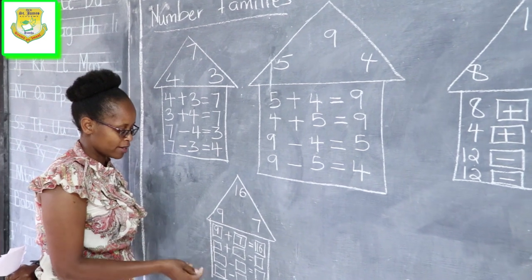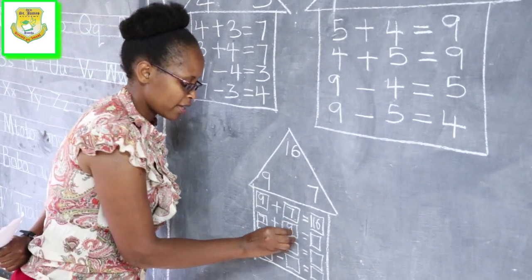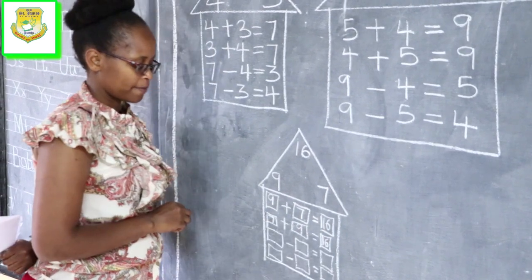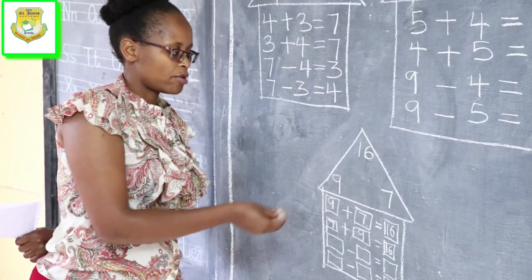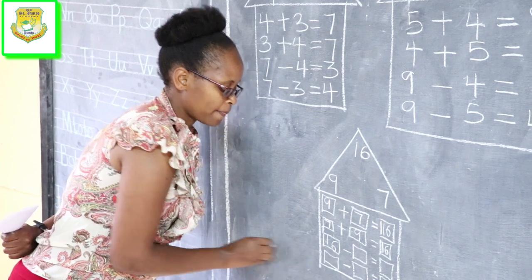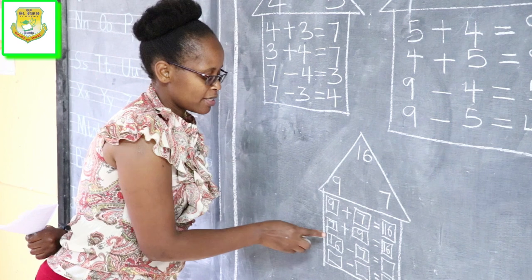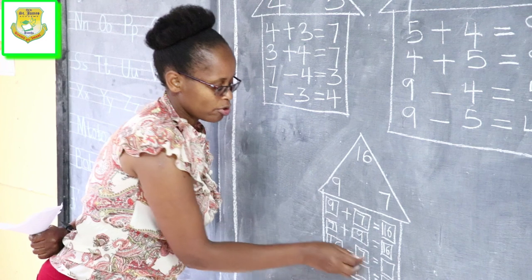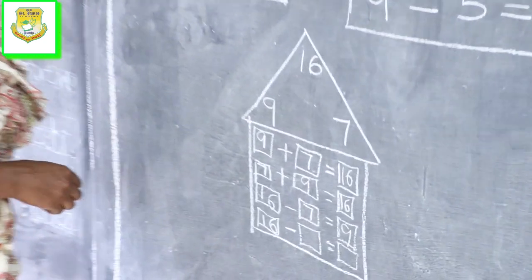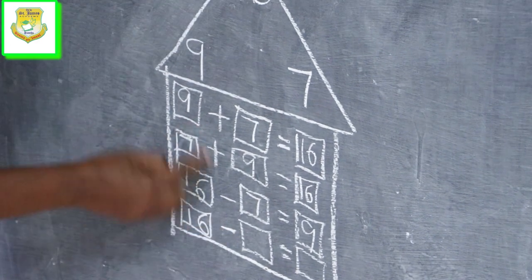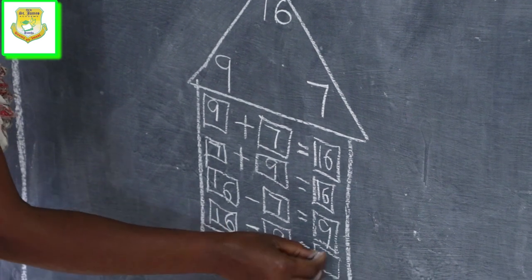Now for the take away sign, we start with the bigger number. Our bigger number is 16, take away either 9 or 7. Let's start with 7: 16 take away 7. Since 16 is represented and 7 is represented, the missing number is 9 — so our answer is 9. Then finally, 16 take away 9: since we began with 7 last time, we alternate and start with 9. 16 take away 9 gives us 7. All these numbers are represented in the number family formed from our heart.